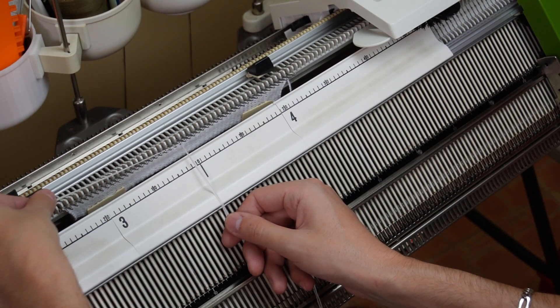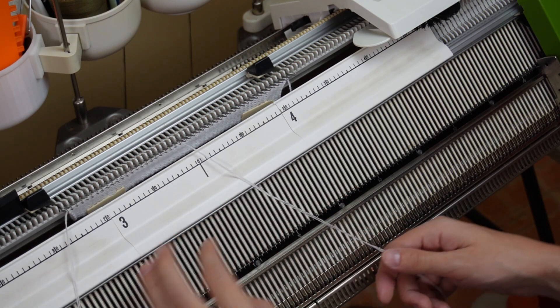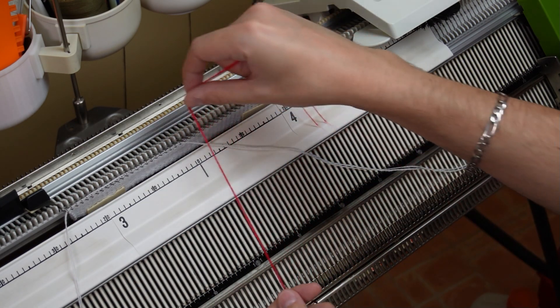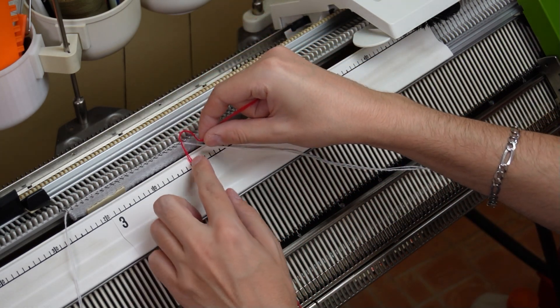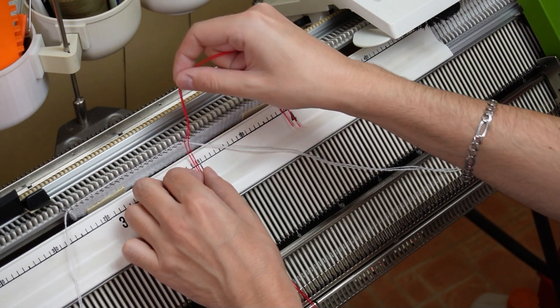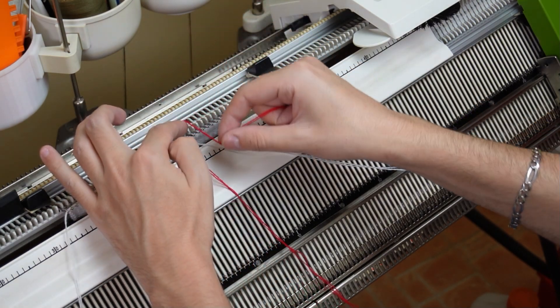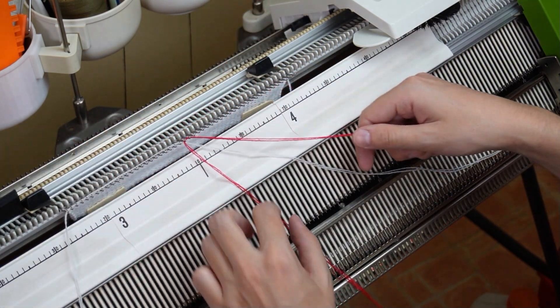Start laying the yarn strands from left to right. This way you will be able to easily take their ends and weigh them down together with a clip. As you can see I am bringing all yarn ends to the right.